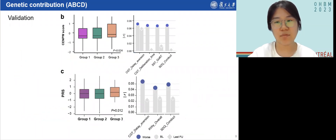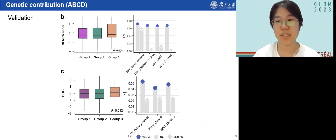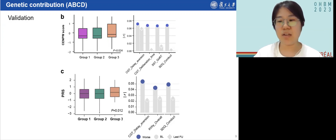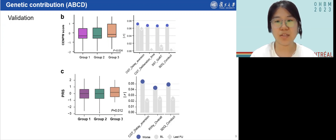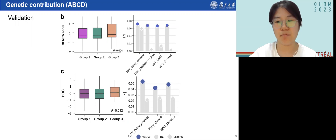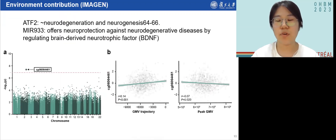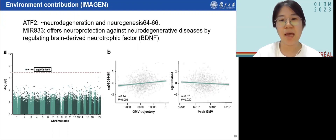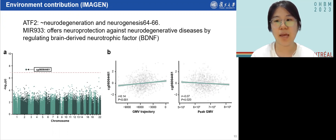We conducted validation of the group 3 GWAS results back in IMAGEN. We calculated PRS for SNPs residing in CNPW — referred to as the CNPW score — and across the whole genome, referred to as PRS. We observed both higher scores in group 3 relative to groups 1 and 2, and a positive correlation between scores and neurocognition and conduct problem improvements in IMAGEN. We also performed an EWAS using group membership as the phenotype and identified a significant hypermethylation site mapped to ADF2 and MIR-933.